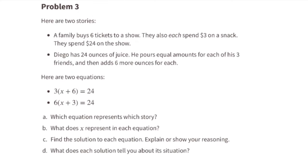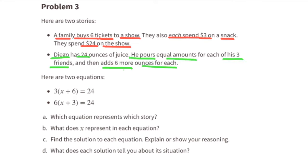Problem number three. Here are two stories. A family buys six tickets to a show; they also each spend three dollars on a snack and spend twenty-four dollars total. Diego has 24 ounces of juice, pours equal amounts for each of his three friends, and then adds six more ounces for each. Part a: the equation six times (x plus three) equals 24 represents the family buying six tickets and each spending three dollars on a snack.